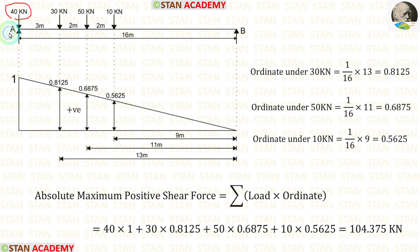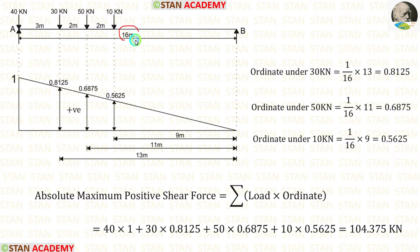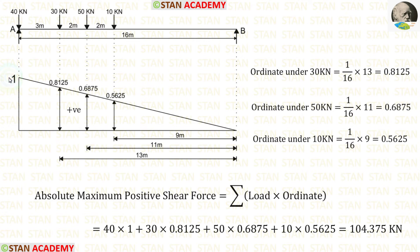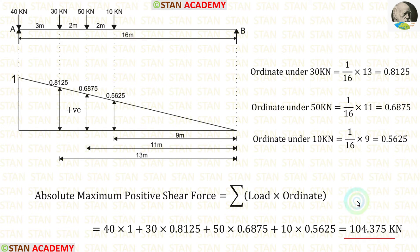The 40 kN point load is kept at point A. Now let us calculate the ordinates for the other loads. For 16 meter the ordinate is 1, but for 13 meter: (1/16) × 13 = 0.8125. For 16 meter it is 1, but for 11 meter we get 0.6875. Now let us calculate the absolute maximum positive shear force by multiplying these ordinates with the loads and adding them. Finally we get 104.375 kN.